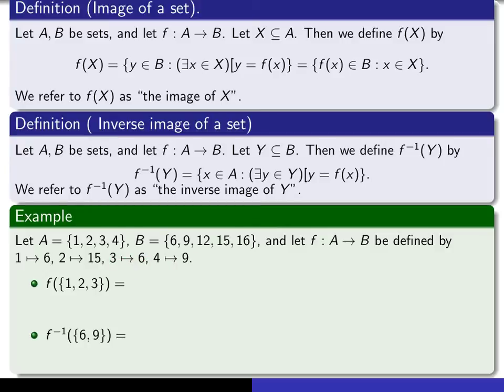So here are two things for you to calculate. This is the image of set {1, 2, 3}. This is the inverse image of {6, 9}. So {1, 2, 3} is sitting in the domain, and {6, 9} is sitting in the codomain. So to take the image of {1, 2, 3}, you just simply take f of each of the things in that set. So you calculate f of 1, f of 2, f of 3, and you put it together in a set.